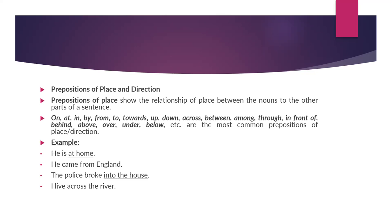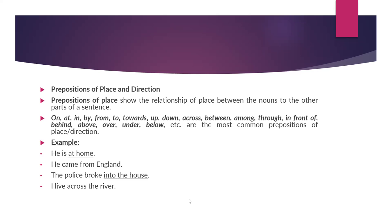Prepositions of place and direction include: on, at, in, by, from, to. These prepositions indicate where something is or the direction of movement. We have now discussed prepositions of place and direction, as well as prepositions of time.